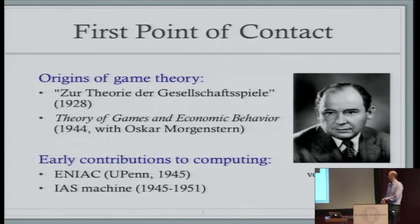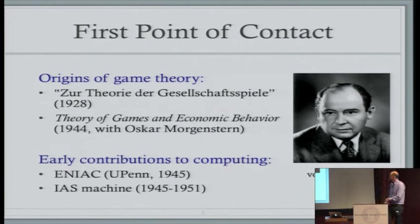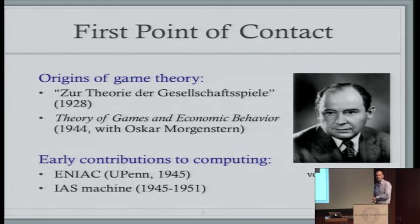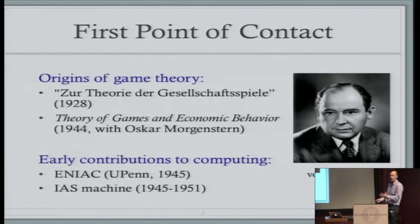Just a couple years after that book, von Neumann started supervising the development of some of the first computers — first as a consultant on the ENIAC, and then also here on the IAS machine. Von Neumann had common motivations for both activities, specifically in military strategy and technology. His two strands of work didn't really interact directly that much, and indeed throughout the 20th century, theoretical computer science and theoretical economics didn't interact or communicate much.